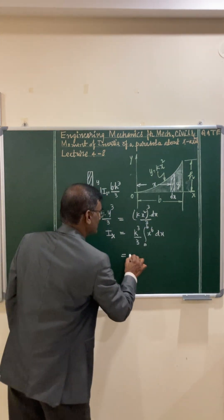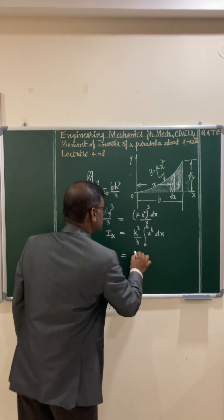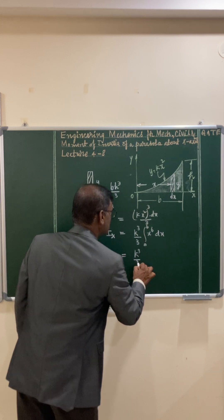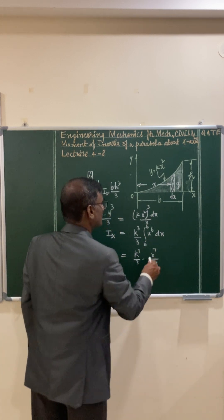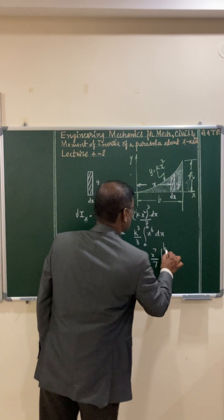And this value, k value, you can substitute k³/3. This is x⁷/7, and the limits are 0 to b.